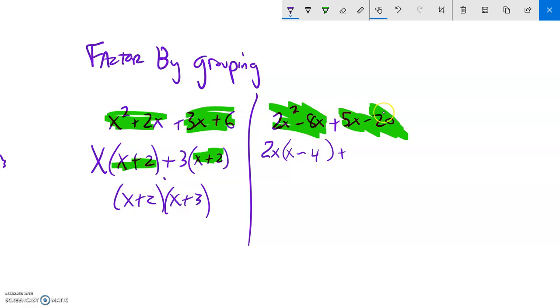Look at the next two terms. This has an x but this doesn't, so I can't take an x out. But they both have a 5. So 5. And again, I get x minus 4. And when factored by grouping works, this will always be the same as that. Because now what you're doing is you're factoring out that x minus 4.